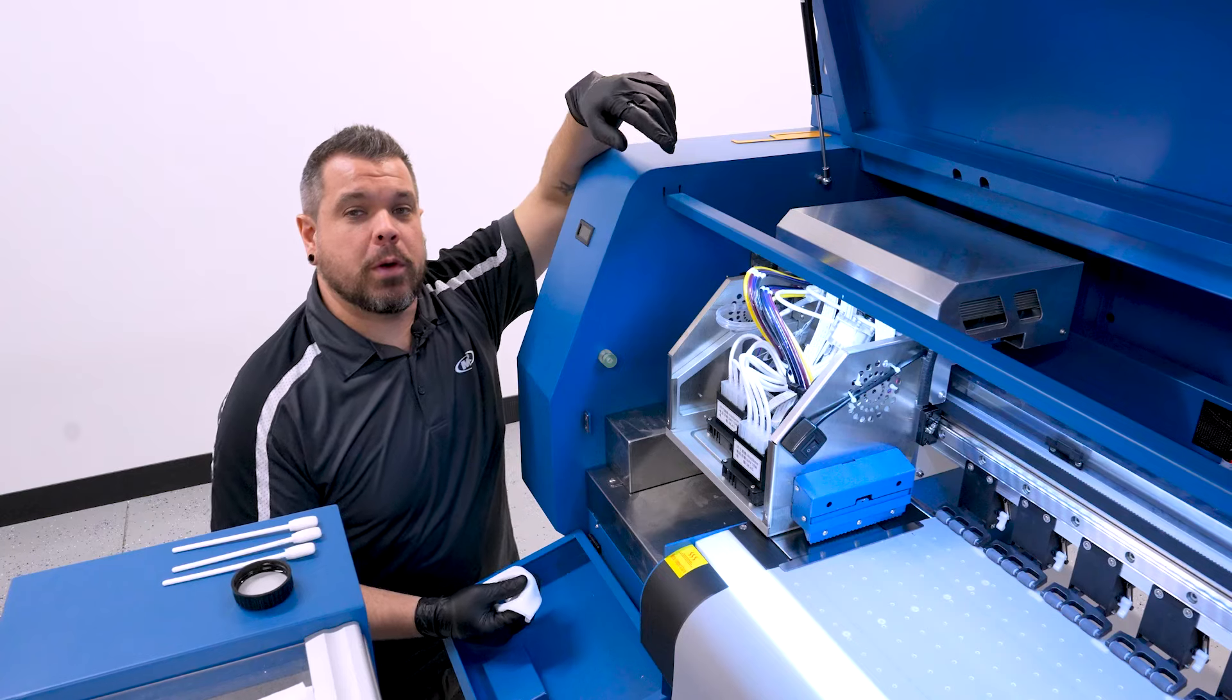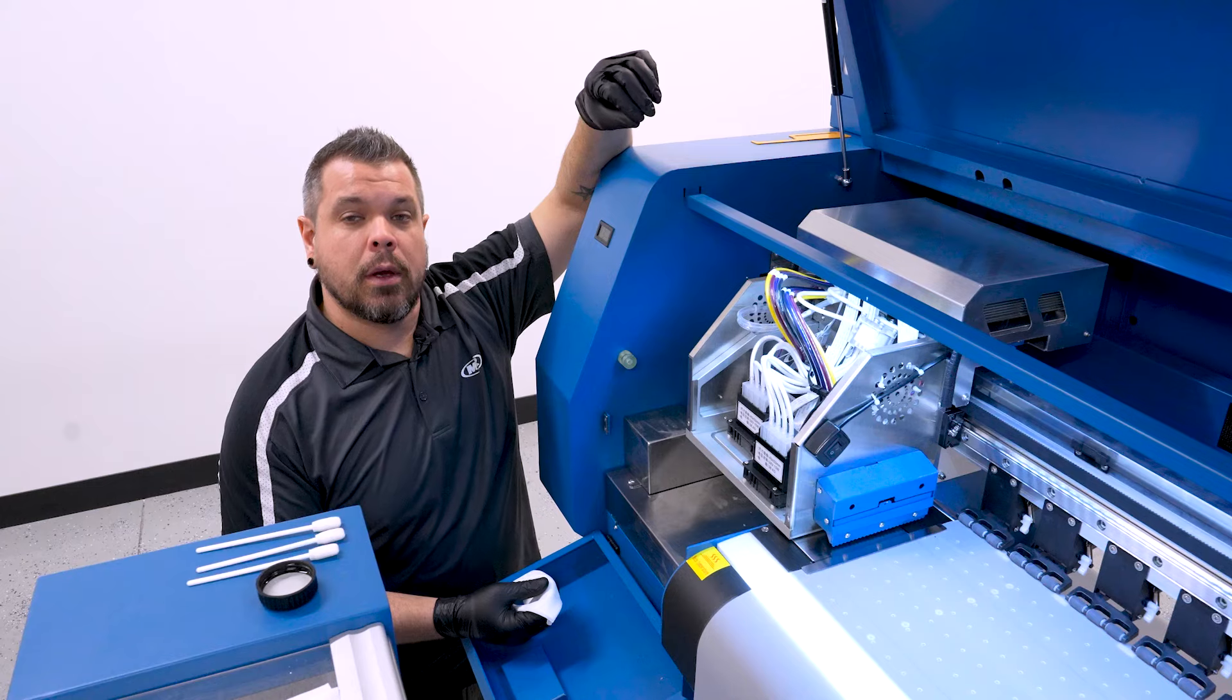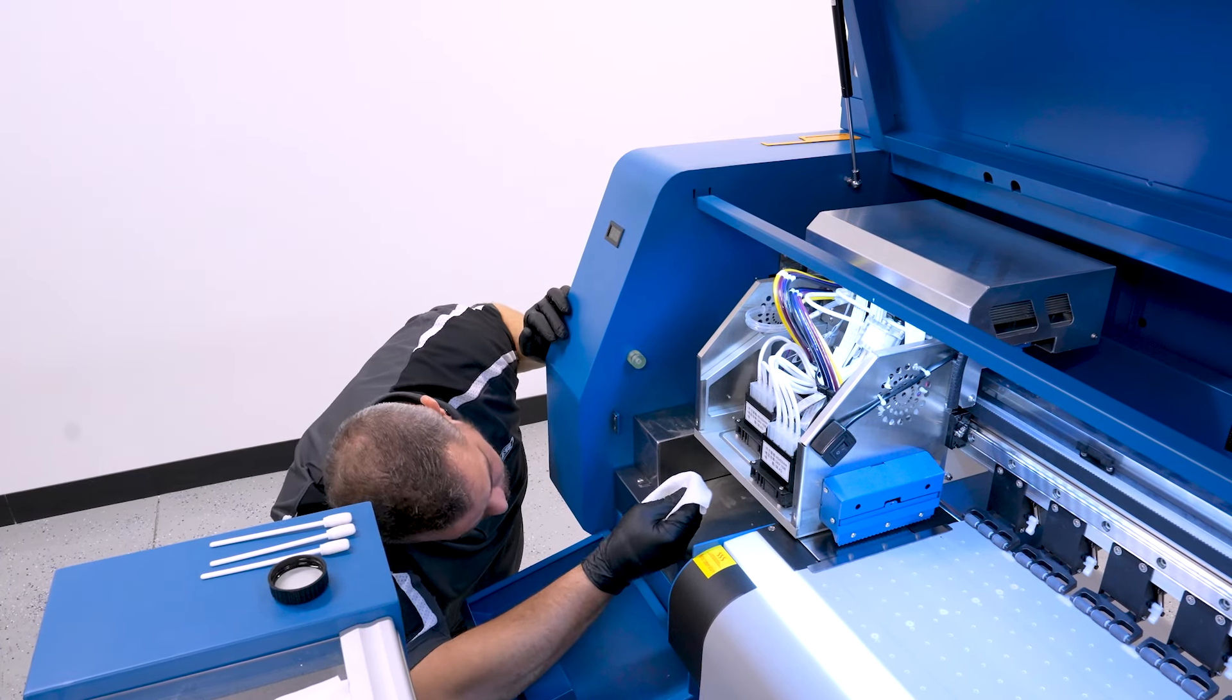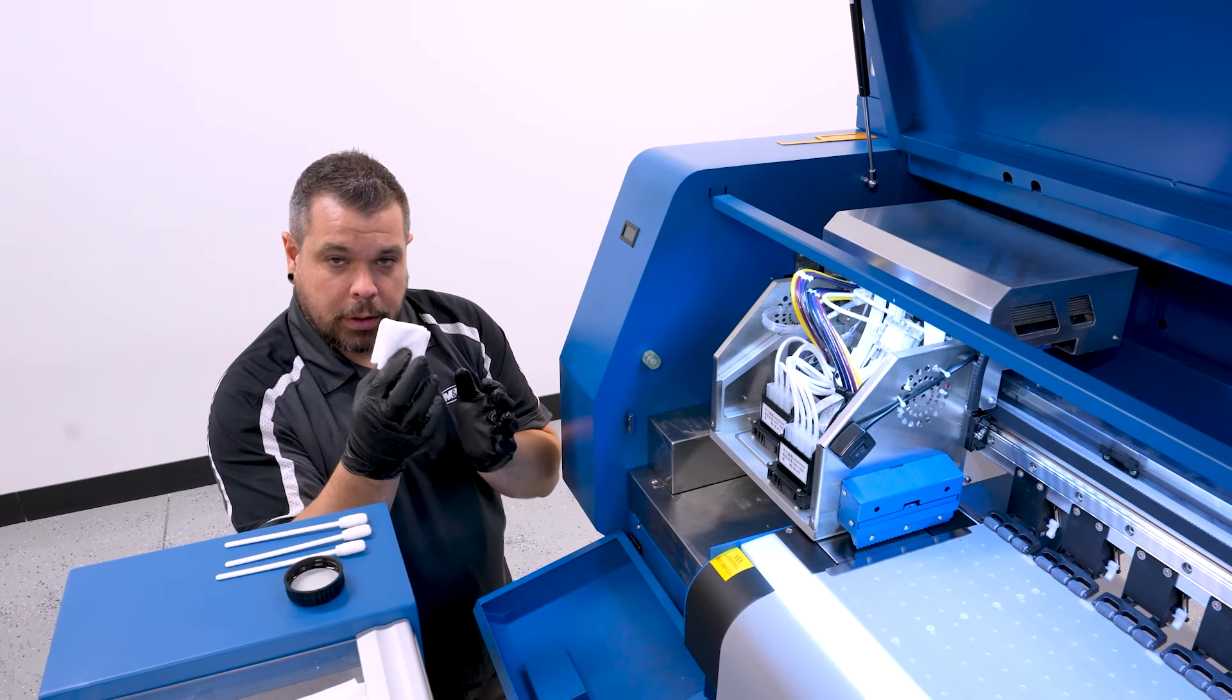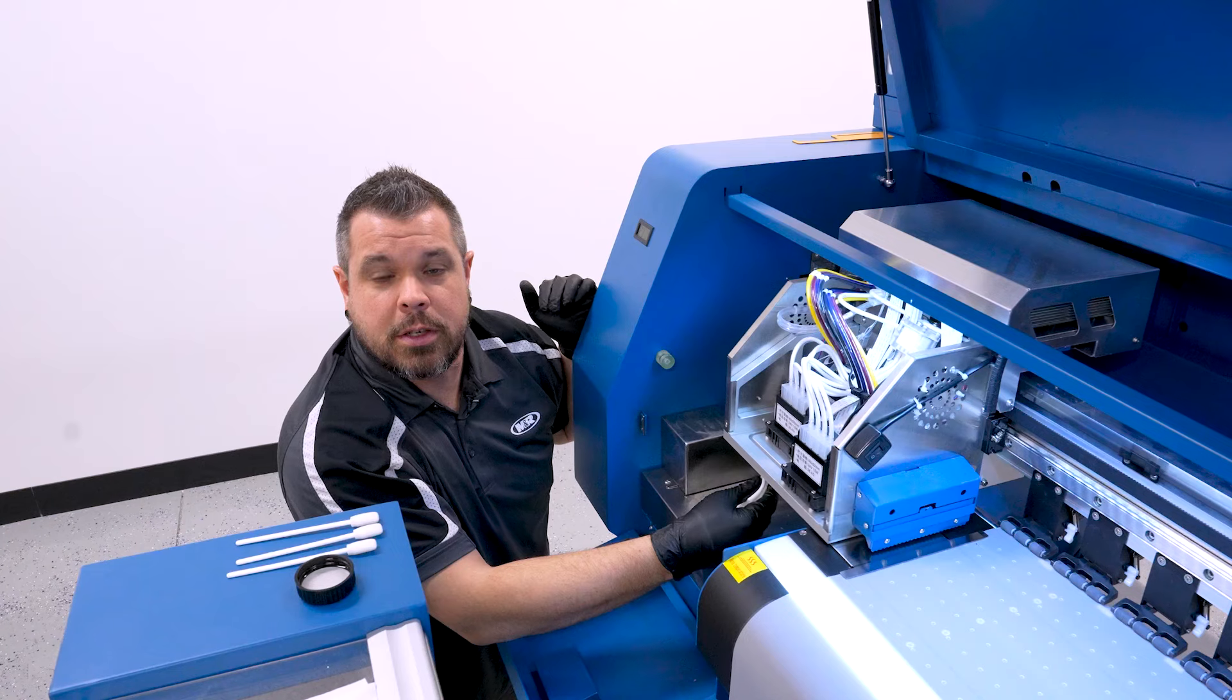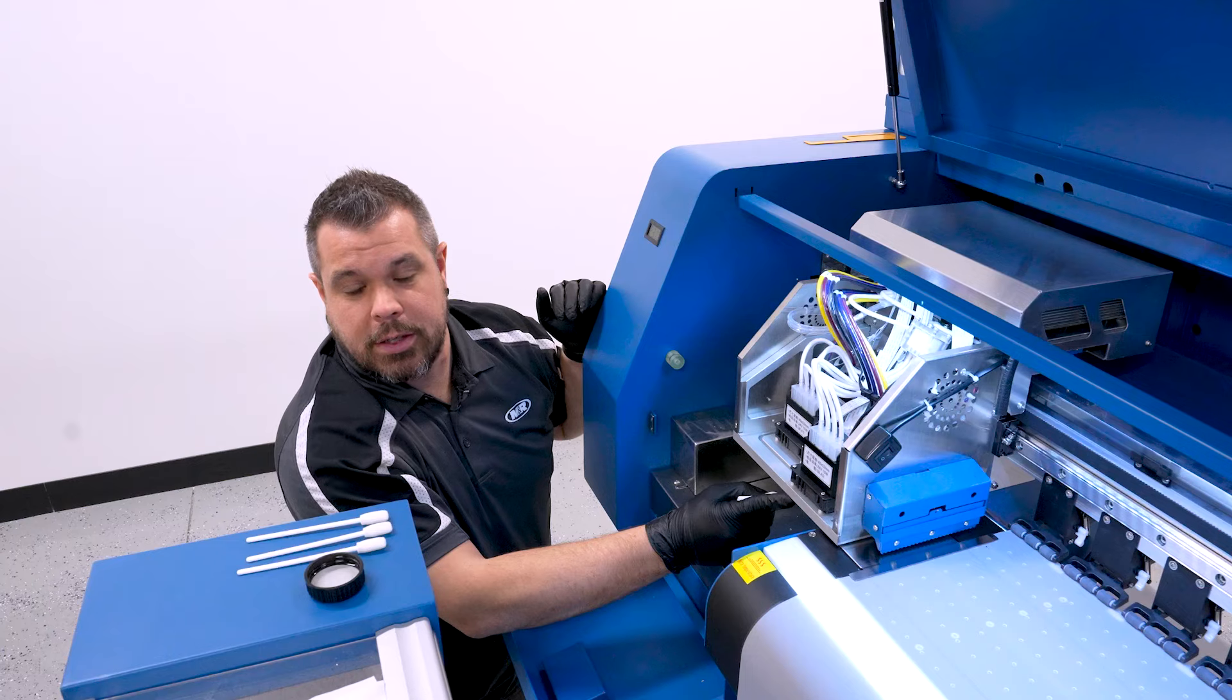The areas that I'm going to focus on first are not going to be the actual print heads because I do want to try to avoid those as much as possible, but I am going to be cleaning the entire head plate that is all the way around all four print heads. I'm just going to take my poly wipe and fold it up a little bit smaller so it's more manageable, and I'm going to inspect it first to make sure I don't have any damage and I don't have any large areas of dry ink that I need to scrape off.